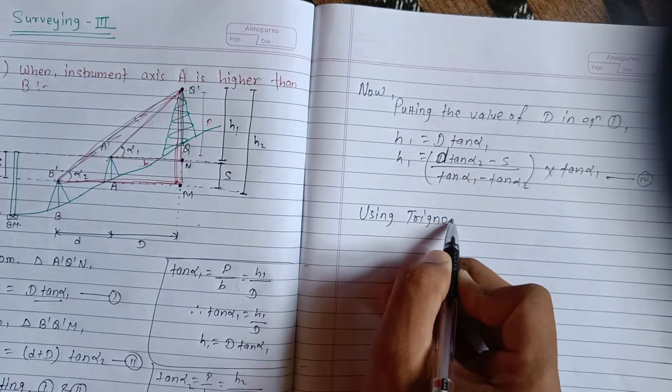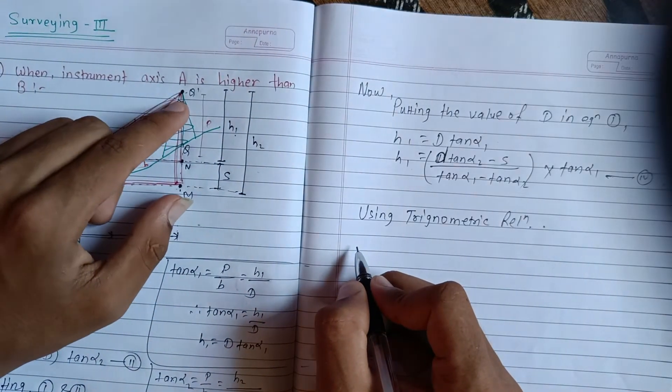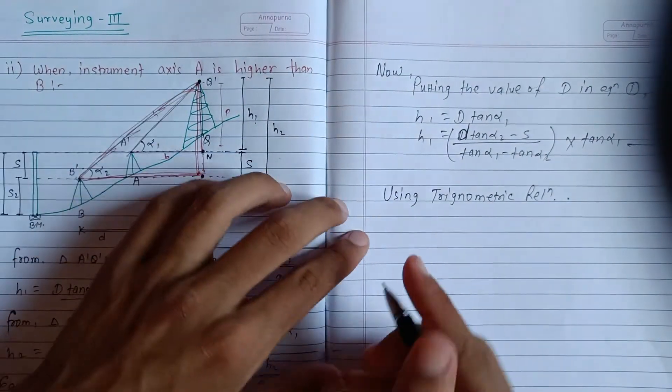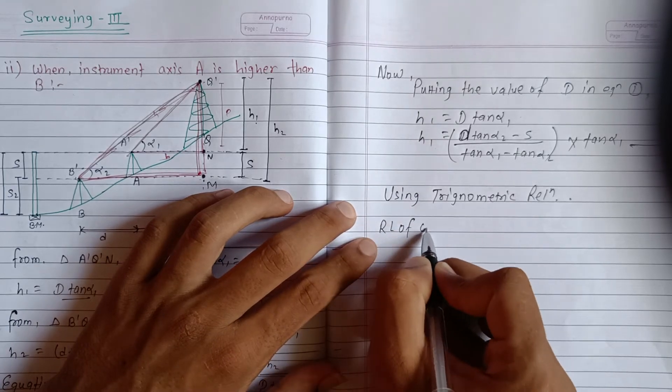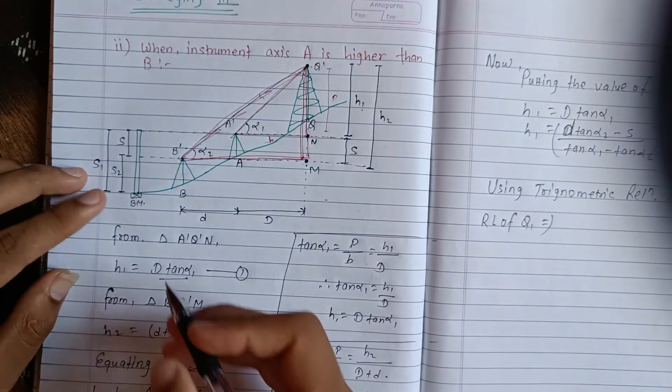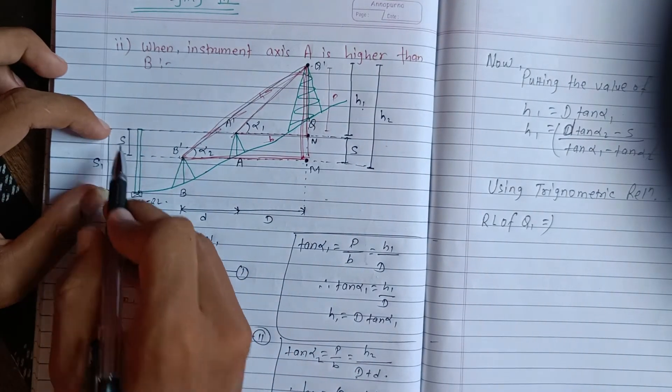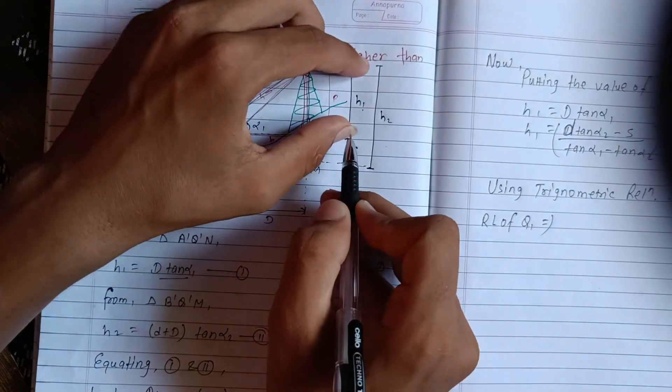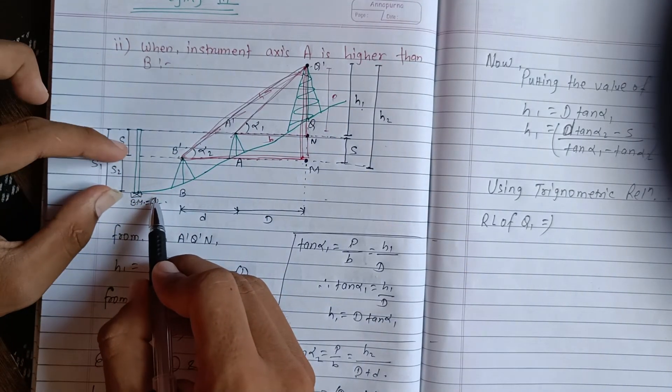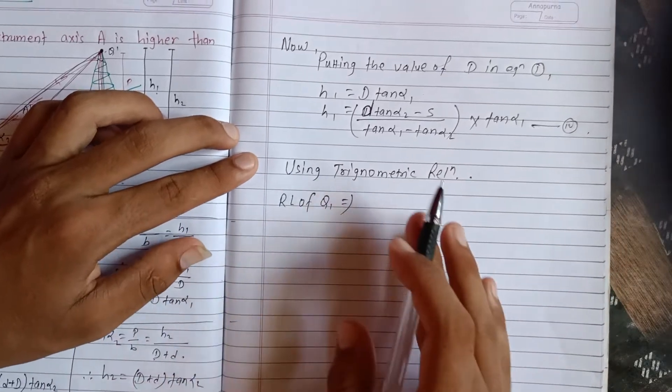Using trigonometric relations, we can determine the height of any tower or object. The elevation or reduced level equals the benchmark value plus the staff readings. RL equals benchmark plus S1, or alternatively RL equals benchmark plus S2.